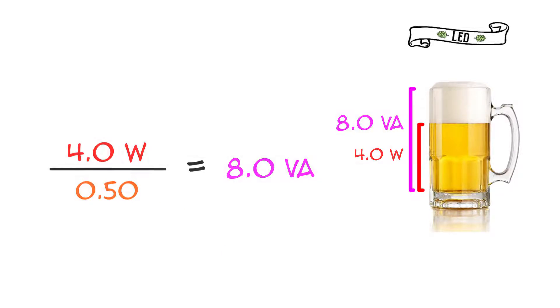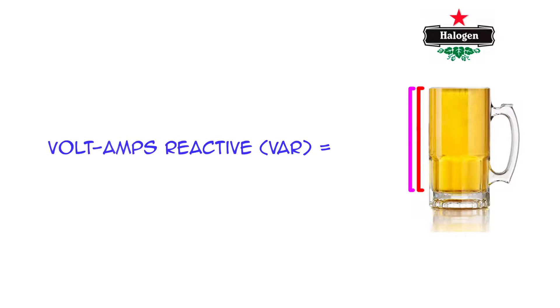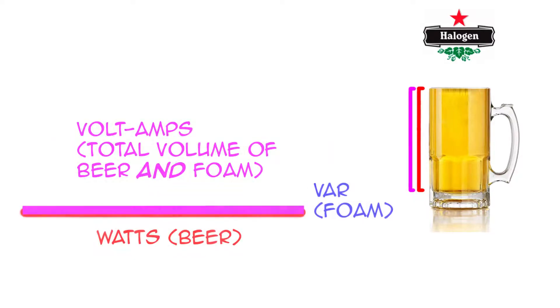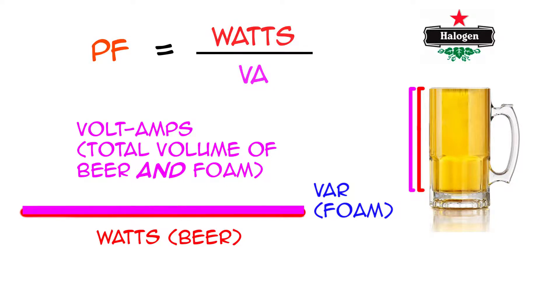So what's with the misconception that watts and volt amps are interchangeable? That comes from the days of incandescent and halogen light bulbs, which, sticking with our analogy, had no foam. Incandescent and halogen bulbs don't require any electronics or power conversion, so no reactive power is used. Any volume used up is used up entirely by liquid beer — for incandescent and halogen bulbs, the volt amps are equal to the watts.